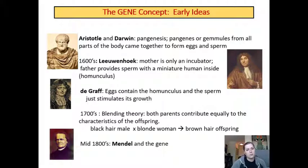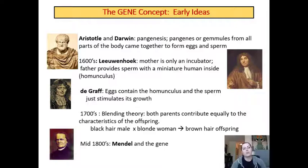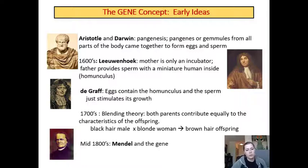In the 1600s, Van Leeuwenhoek came up with the idea that the mother was actually only an incubator for the child, and that the father, who provided sperm, actually provided a miniature human inside of his sperm, called a homunculus. A little bit later on, they decided that the homunculus was actually contained in the egg, and that the sperm just stimulated its growth.